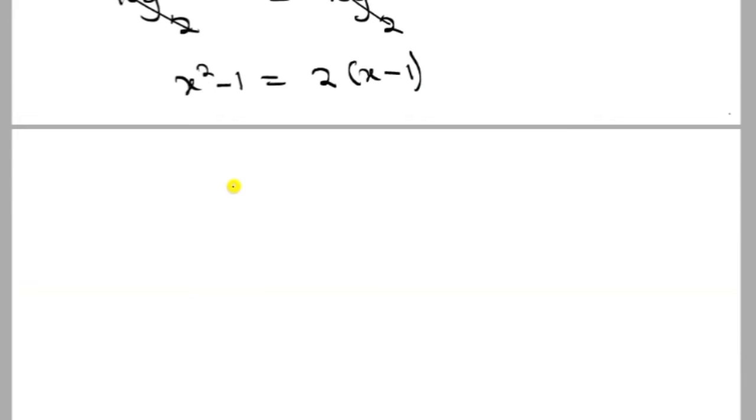So here you have x plus 1 into x minus 1 is equal to 2 into x minus 1. What can you do here now? If I move this to the other side, I'm going to get x plus 1...